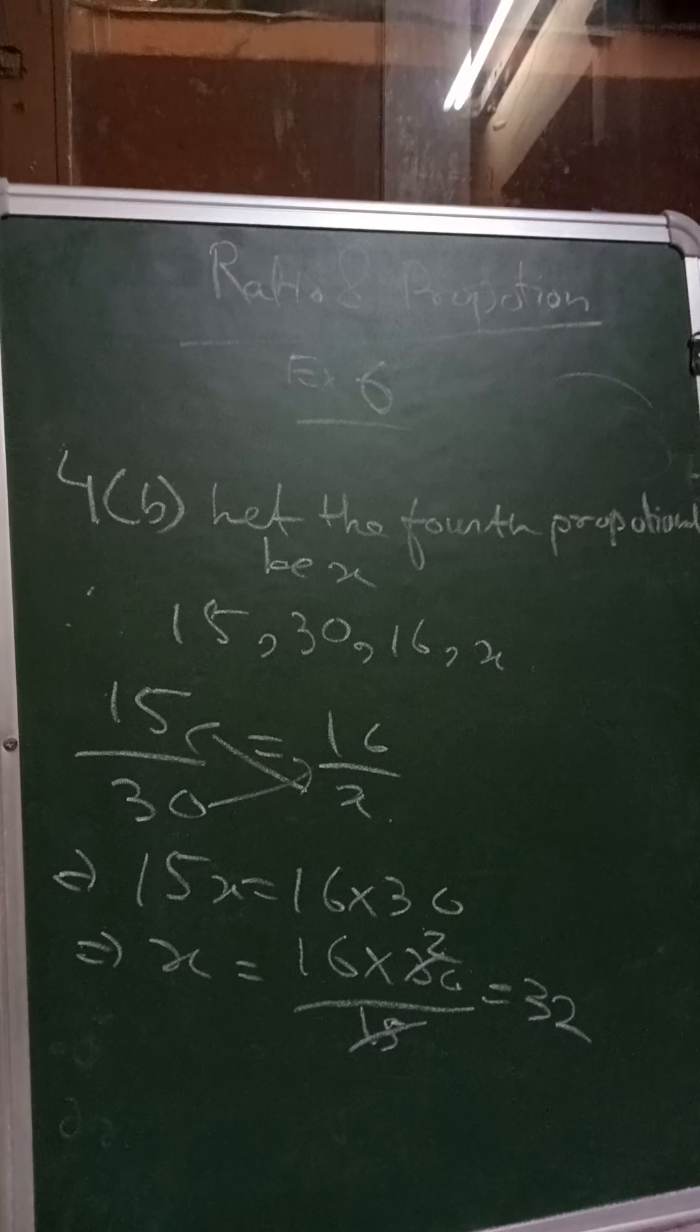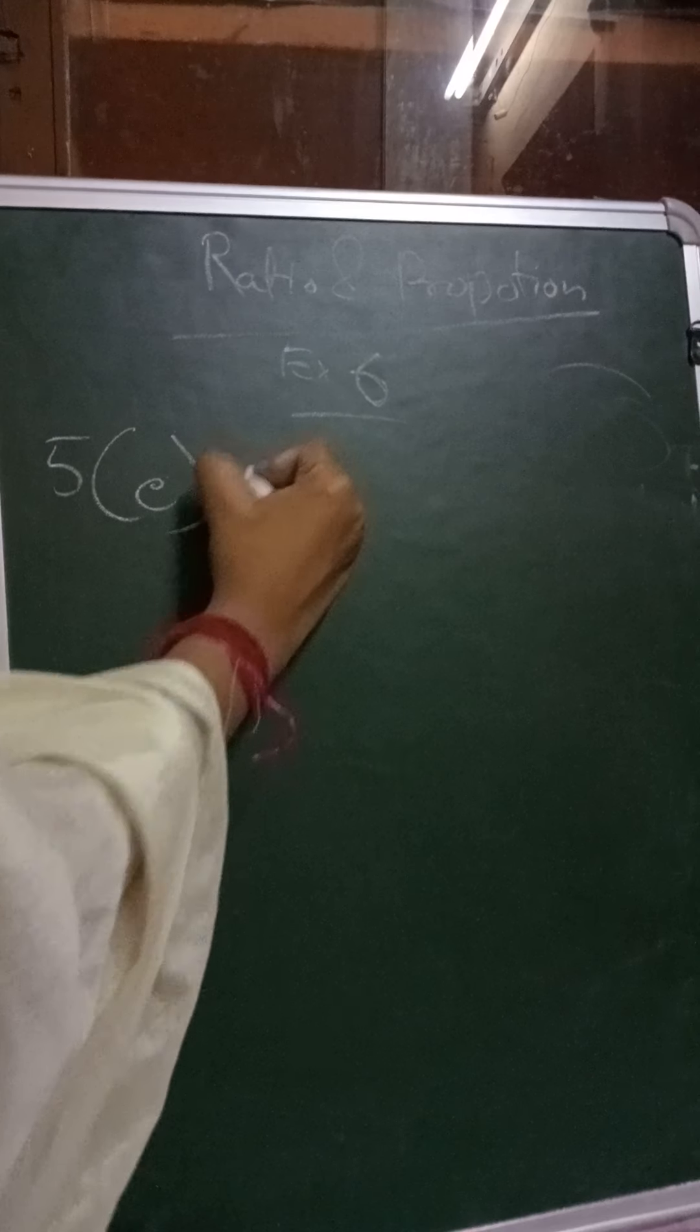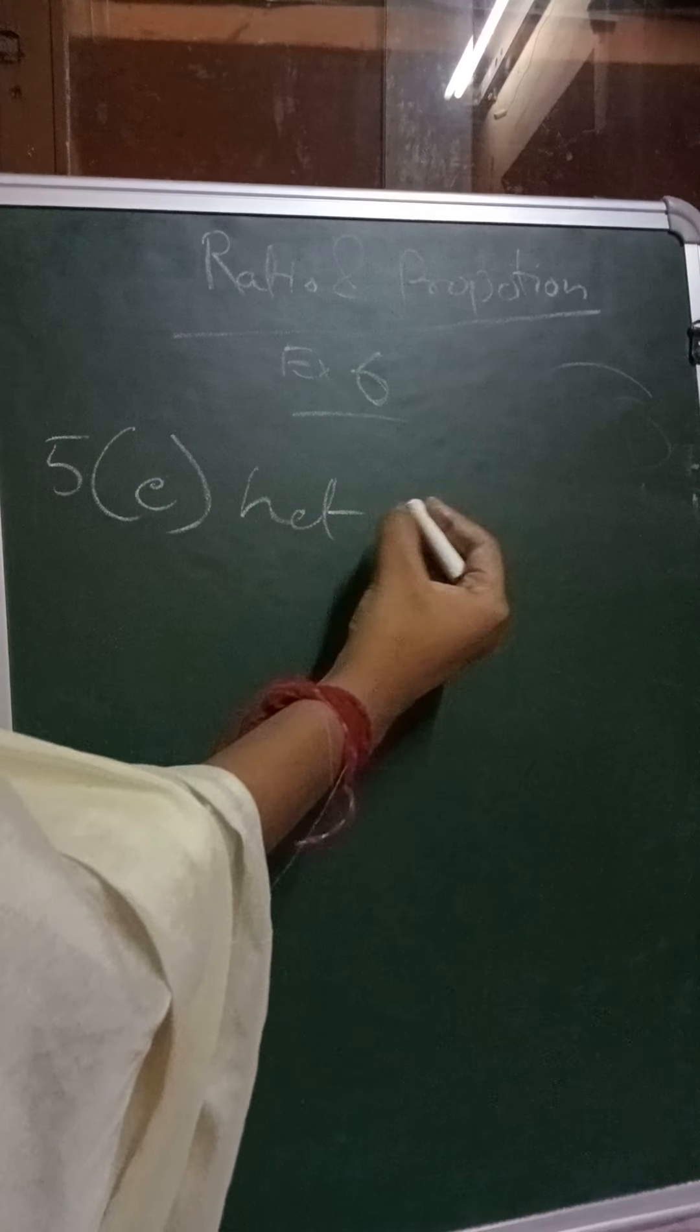So I think this is clear. Now we will be discussing sum number 5C where we have been asked to find out the third proportion. So again we will consider the third proportion as x.